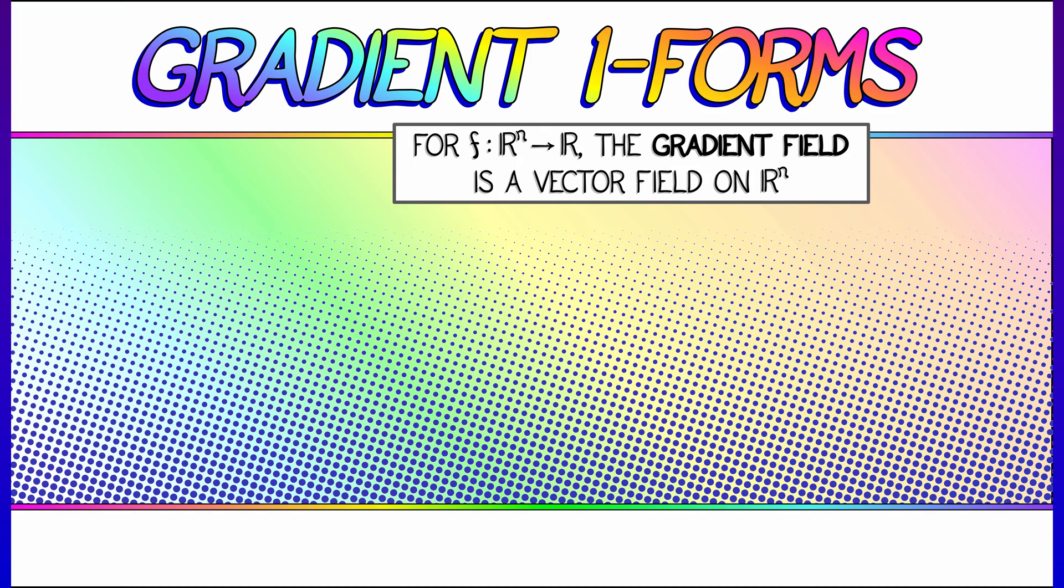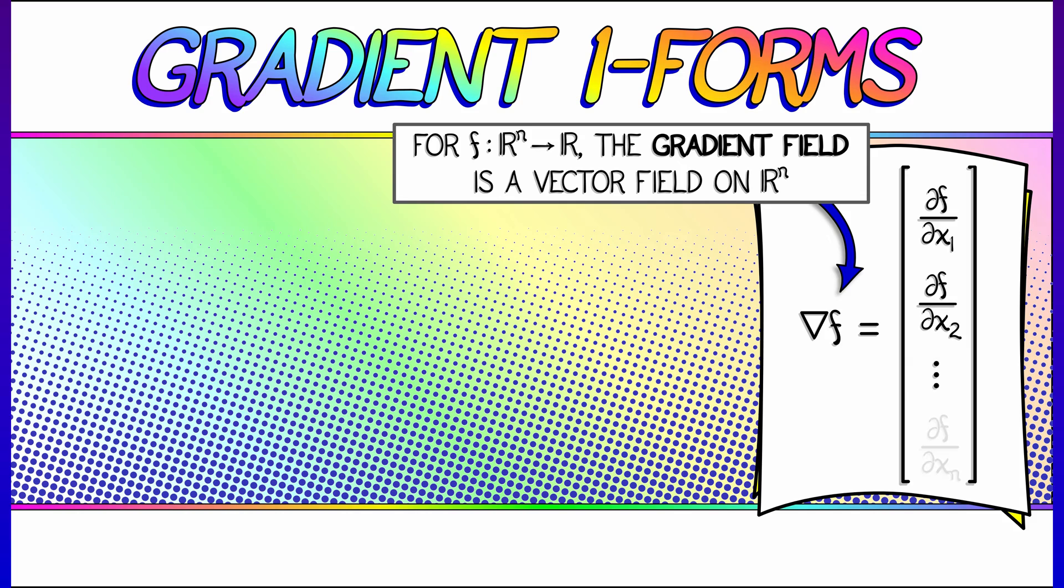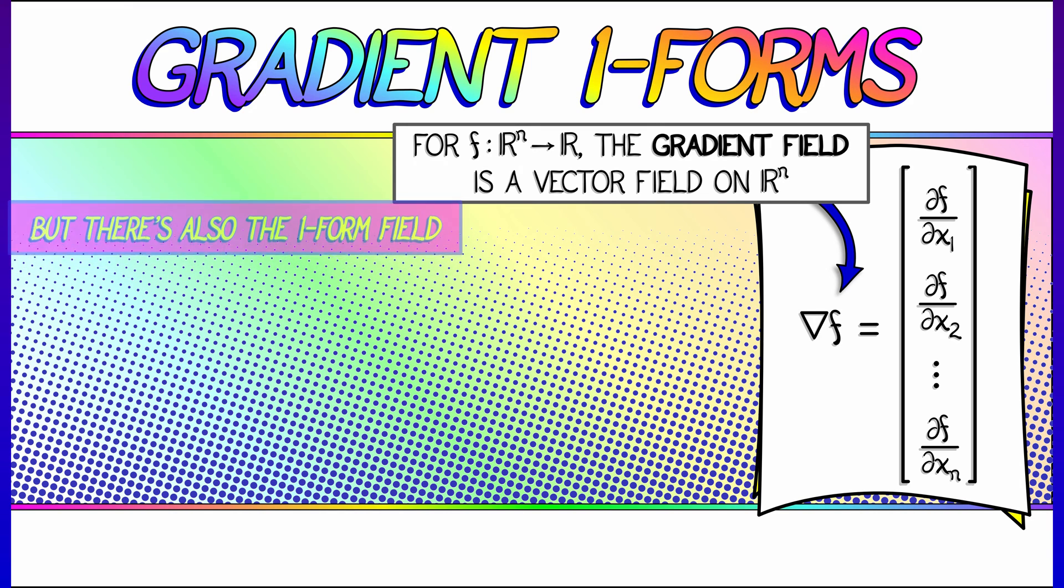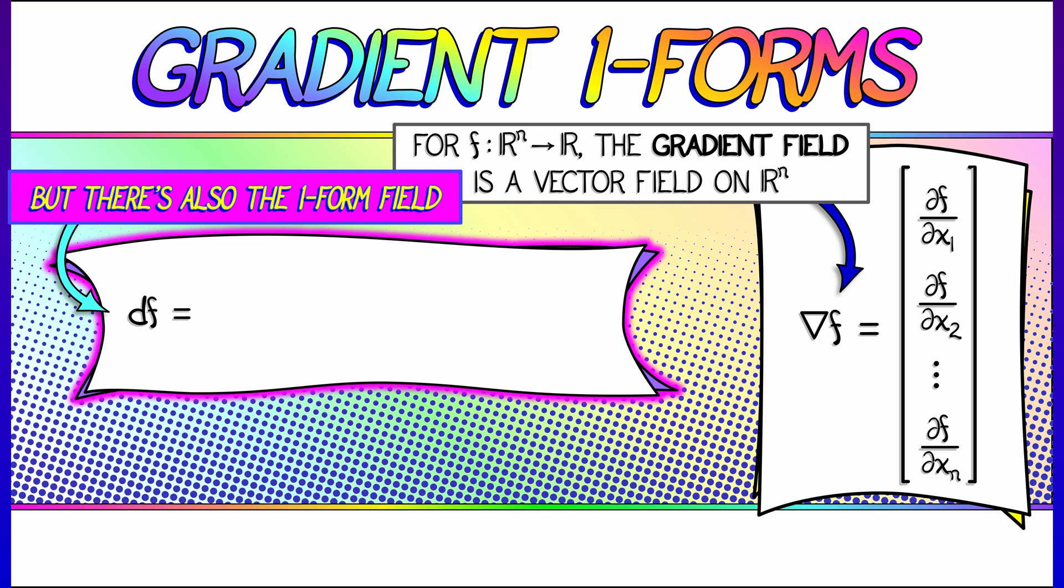Remember, when you have a scalar field f on R^n, then the gradient field back from volume 2 was computed as a vector field on R^n. Grad f at a particular point is given by ∂f/∂x₁, ∂f/∂x₂, all the way up through ∂f/∂xₙ. I can think of that as being a vector at every point in space. But there's also the one-form field given by ∂f/∂x₁ dx₁ + ∂f/∂x₂ dx₂, all the way up through ∂f/∂xₙ dxₙ.